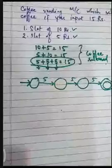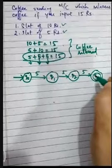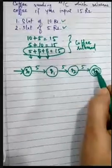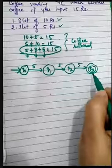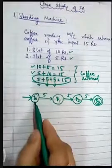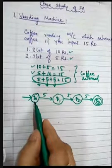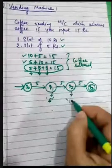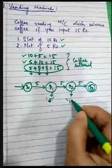If I input 5-rupee coins three times I will get the coffee released. Now there are two other cases which also give coffee release, meaning they take us to the final state. One is the case 10 plus 5. This state represents the machine having received 5 rupees, this state represents the machine having received 10 rupees, and this state represents the machine having received 15 rupees.